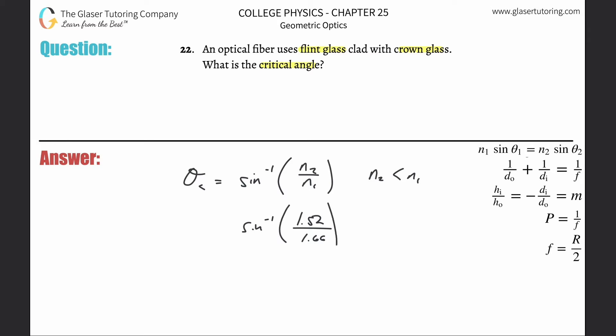So just plug it in: inverse sine of 1.52 over 1.66 equals 66.3 degrees. The critical angle is 66.3 degrees.